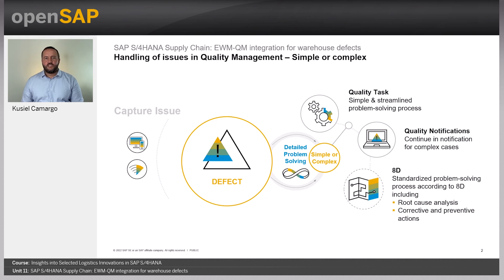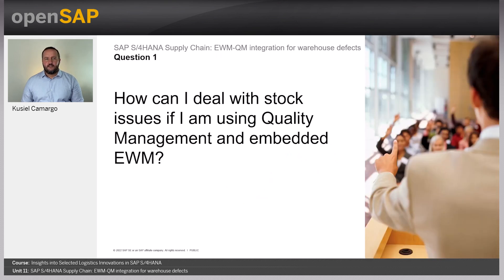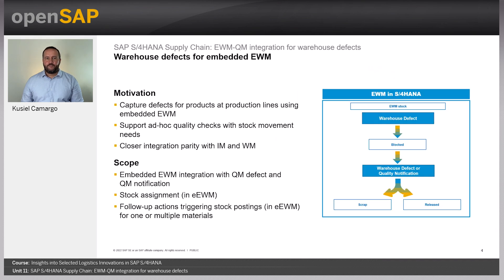Now that we are aware of all these options in SAP S/4HANA, the question that comes to our minds is: how can I deal with stock issues if I'm using quality management and embedded EWM? The answer is a new object called warehouse defect. It was created to make the defect recording easier and simpler, and to enable the embedded EWM stock integration with QM through logistical follow-up actions.